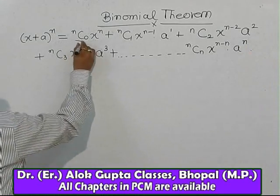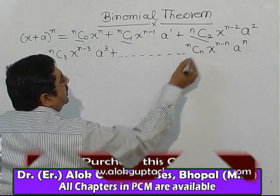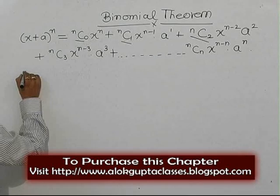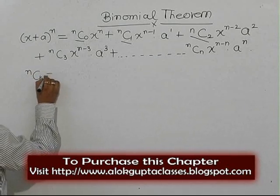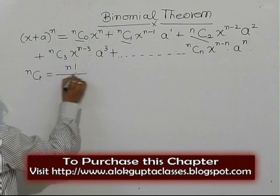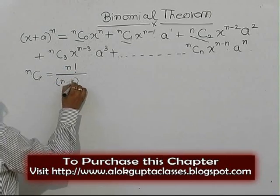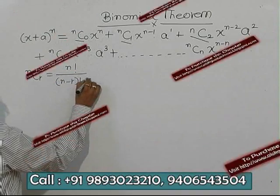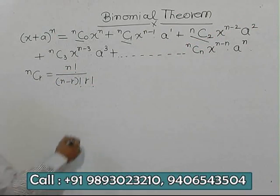Now, the value of these coefficients comes from combinations. You know what nCr is — nCr equals n factorial divided by (n minus r) factorial, divided by r factorial.